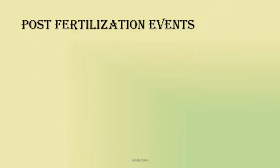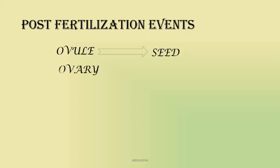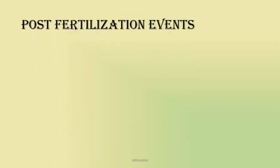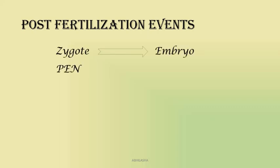After double fertilization, the post-fertilization events begin. The ovule will gradually develop into the seed and the ovary will form the fruit. But what happens to the other cells in the embryo sac? Synergids degenerate. The zygote and central cell you already know. The antipodals also degenerate. Two developments must happen: zygote to embryo, and primary endosperm nucleus to endosperm.